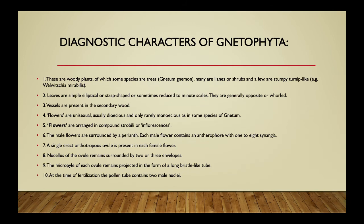Secondary wood is formed as cambium grows, cutting xylem inside and phloem outside, producing an annual ring each year. Flowers are unisexual, usually dioecious and only rarely monoecious, as in some species of Gnetum. Flowers are arranged in compound strobili, also known as inflorescence. Male flowers are surrounded by a perianth, which is a kind of holding structure.